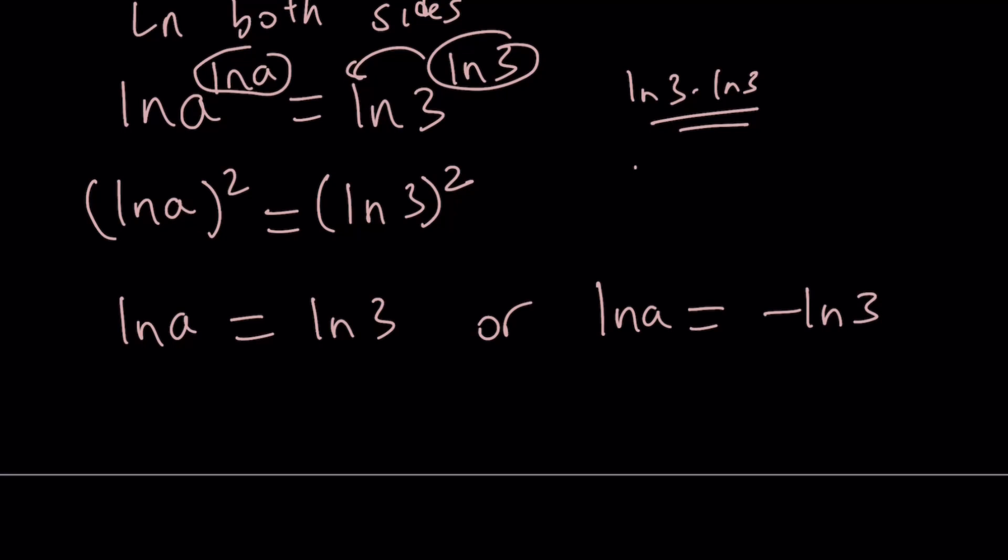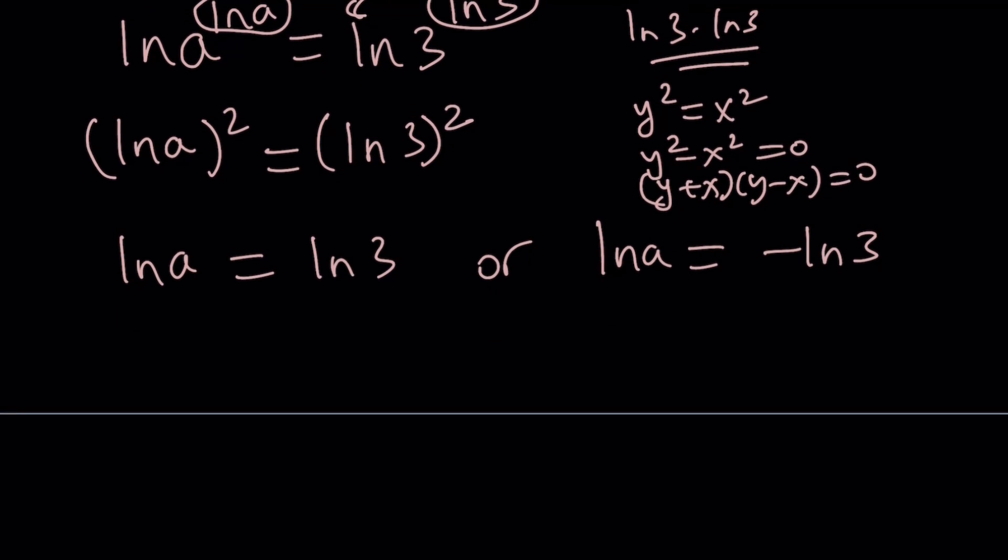Here's how the difference of two squares works. If y squared equals x squared, then you can write this as y squared minus x squared equals 0. And then y plus x, y minus x is equal to 0. From here, you get the two results: y equals x or y equals negative x.